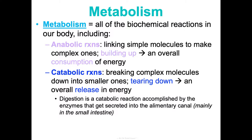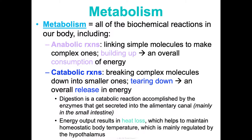Digestion, which was all of concept one, is a catabolic reaction accomplished by enzymes secreted into your GI tract — mainly your small intestine — to break down food. Interestingly, part of that overall energy release in catabolic reactions is heat loss, which is really important to maintaining homeostatic body temperature. Your hypothalamus is mainly regulating that. Your body is in a constant dynamic balance of anabolic and catabolic reactions — molecules are constantly being broken down and built into other things.